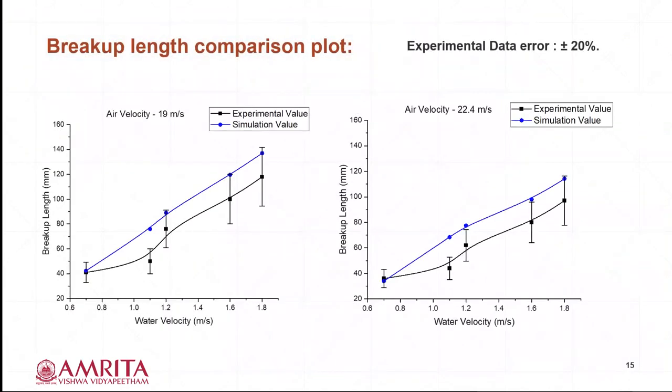Coming to the breakup length comparison plot. The breakup length is plotted against the water velocities with constant air velocities. From the plot, we can observe that the breakup is increasing by increasing the water velocity for both experimental values and the simulation value. The experimental data has an uncertainty of ±20%. For the left plot, where air velocity is 19 m/s, the minimum, maximum and average uncertainty of the simulation values from the experimental values is 3.3%, 34.2%, 16.4% respectively. For the right plot, where air velocity is 22.4 m/s, the minimum, maximum and average uncertainty is found out to be 5.8%, 20%, 18.9% respectively.